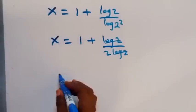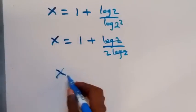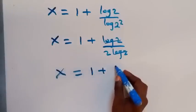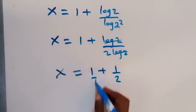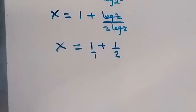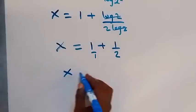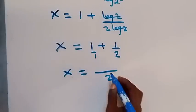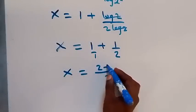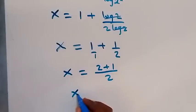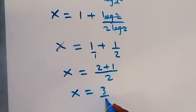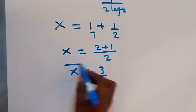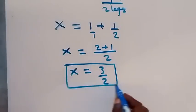We are left with x equals 1 plus 1 over 2. Bringing this together as a single fraction: x equals 2 over 2 plus 1 over 2, which gives x equals 3 over 2. So the value of x in this problem is 3 over 2.